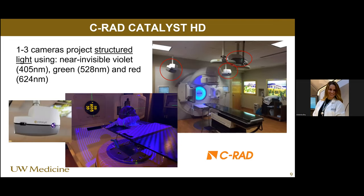Here is the C-RAD Catalyst HD system, from my old clinic in San Antonio, Texas. The C-RAD system uses typically one to three cameras and projects structured light — specifically a near-invisible violet light. You can see it projected onto a phantom on the table as lines. On the left is what the scanner looks like, and on the right you can see three of those scanners mounted on the ceiling above the treatment table.